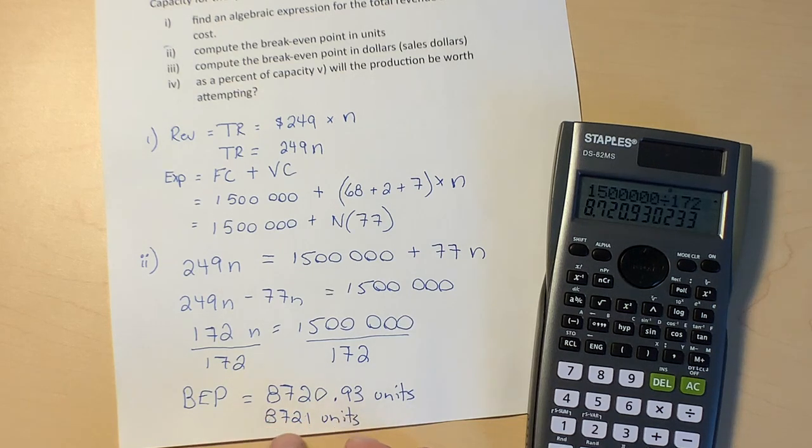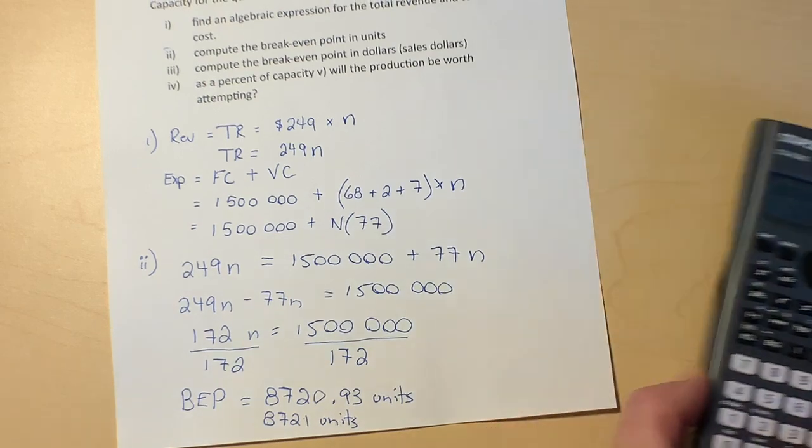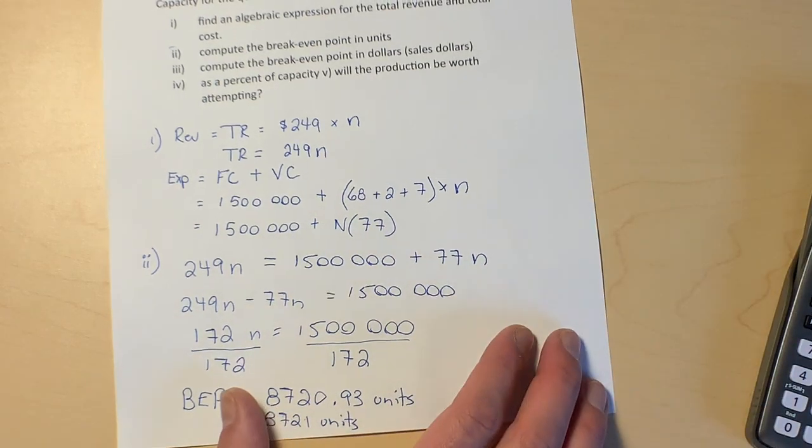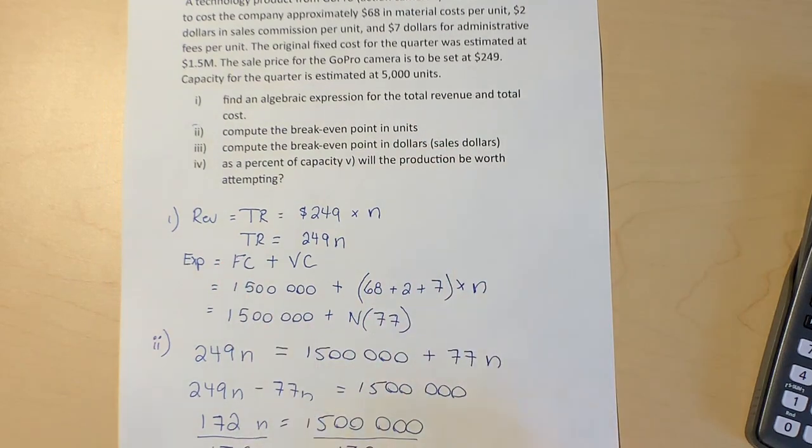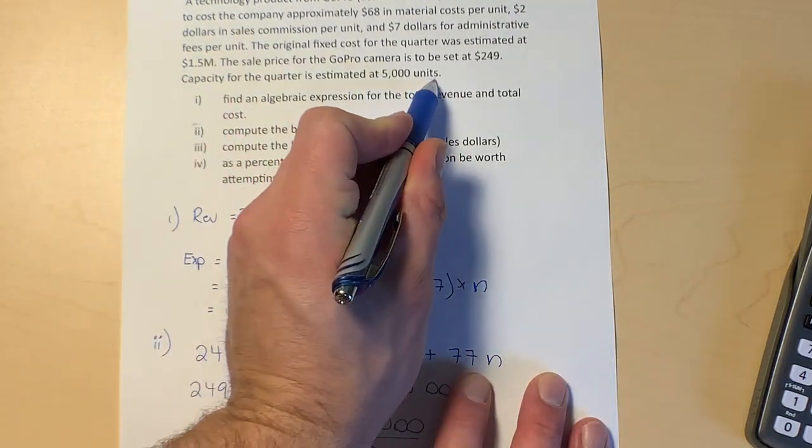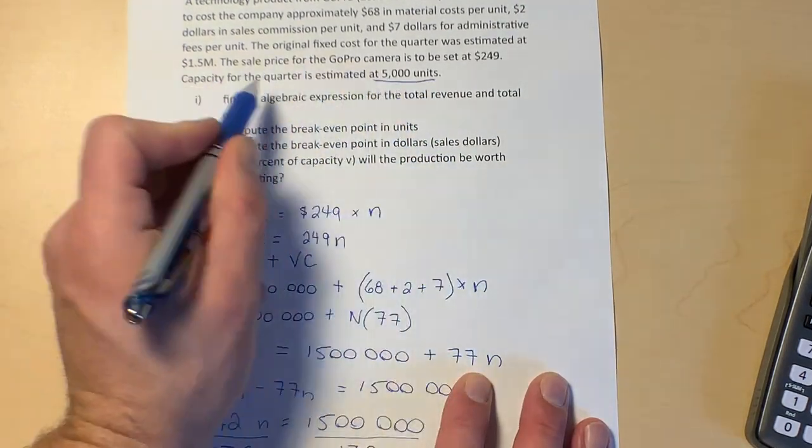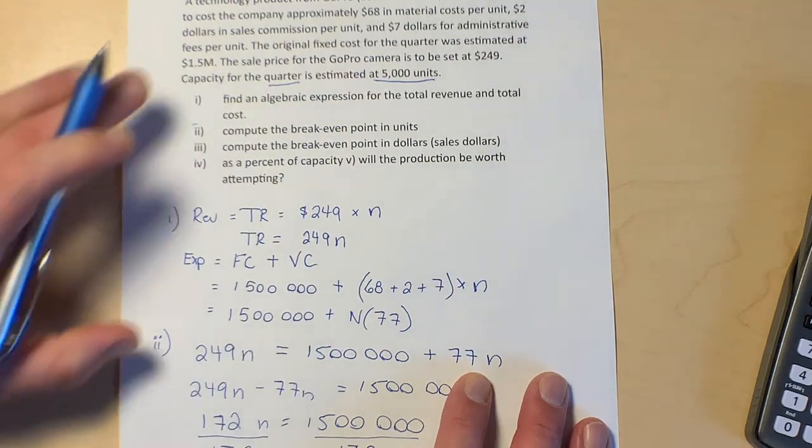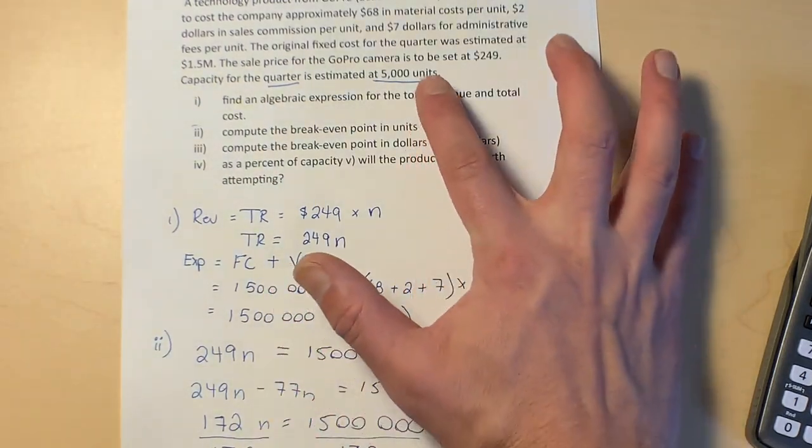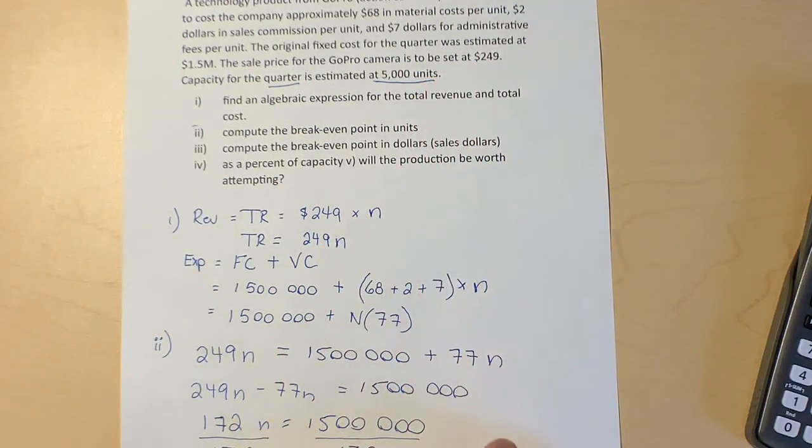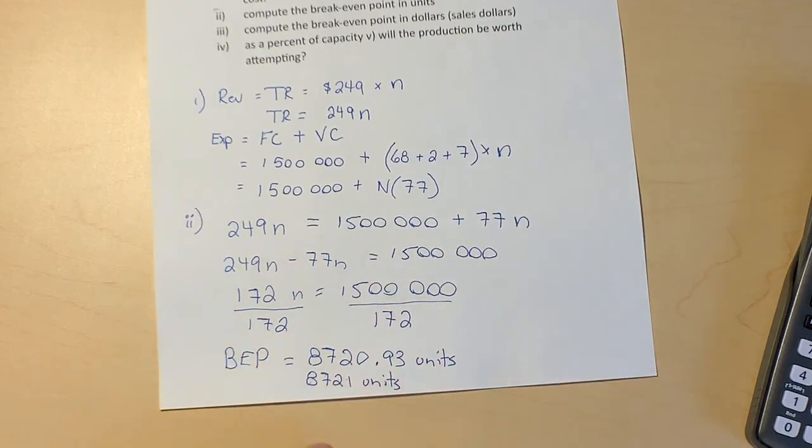Now let's put that into perspective though. This question is saying that we can only make 5,000 units per quarter. If we can only make 5,000 units and we need 8,700 units to break even, then that means that we will not break even in one quarter.